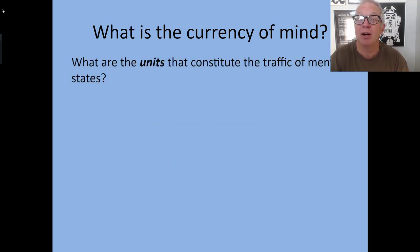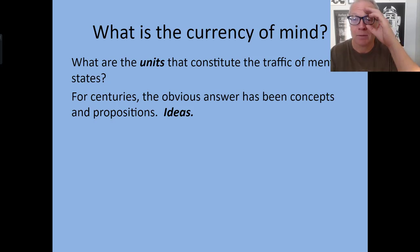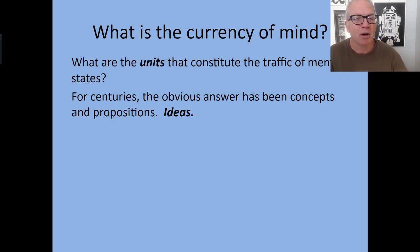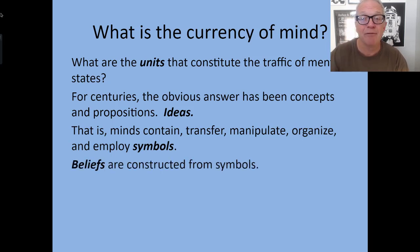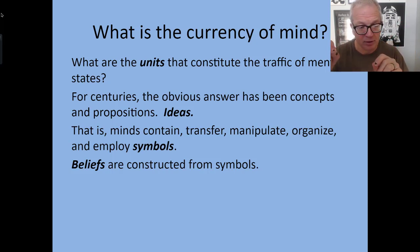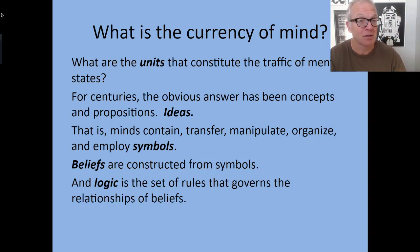What's the currency of the mind — what are the units that constitute the traffic of mental states? For centuries, the obvious answer has been concepts, propositions, or ideas. That's the way we all still talk. The view is that minds contain, transfer, manipulate, organize, and employ symbols. These symbols stand for things. Beliefs are constructed from symbols — I have a belief about a dog having paws, and those are the symbols, the English terms standing for the thing. Logic is the set of rules that governs the relationship of the beliefs.